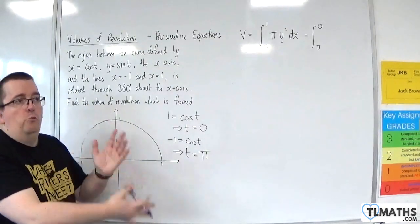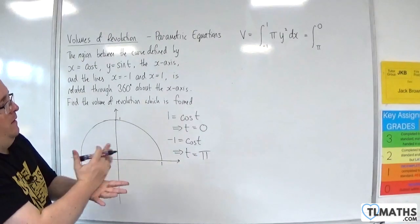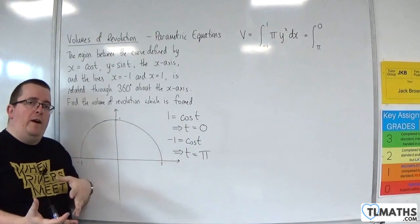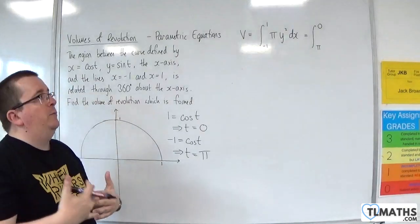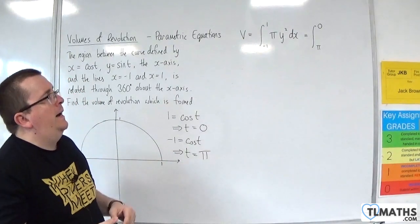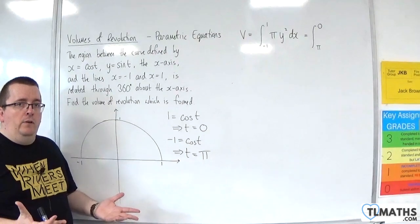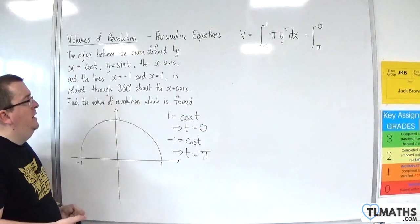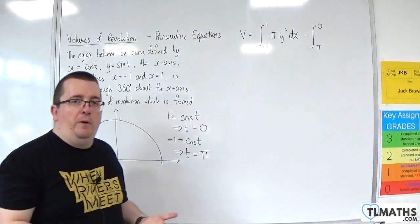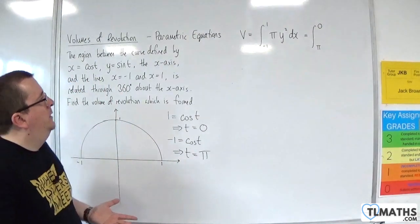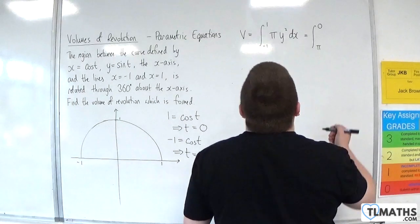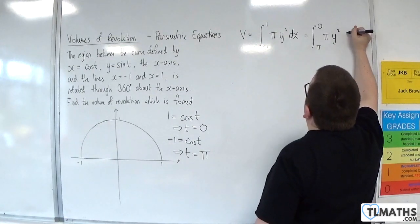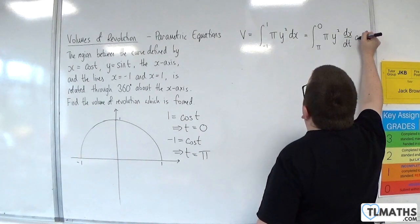But don't worry about that. But that is important that we get that right. If we got them the wrong way round, we put 0 at a pi, we would get the negative of our answer, the negative of the correct answer. So we should get minus 4 thirds pi if we do that.